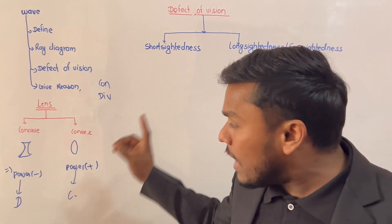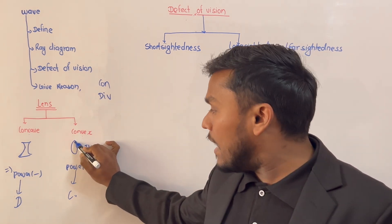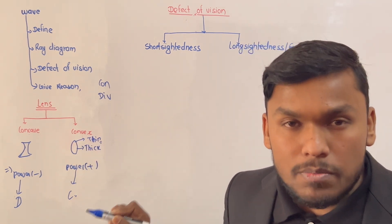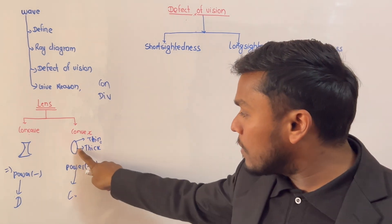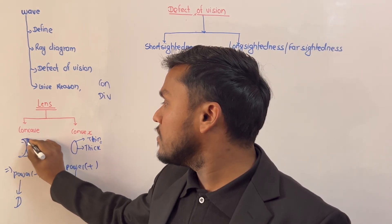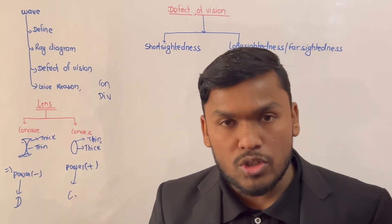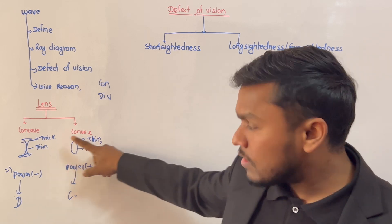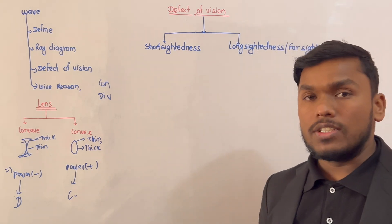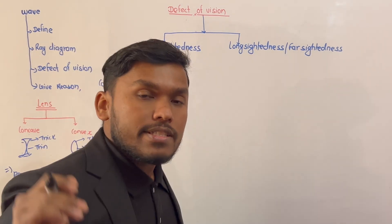The lens which is thick in the middle and thin at the edges — that is one type. The other is thin in the middle and thick at the edges. This describes the basic physical shape used to identify concave and convex lenses and understand short and long sightedness.